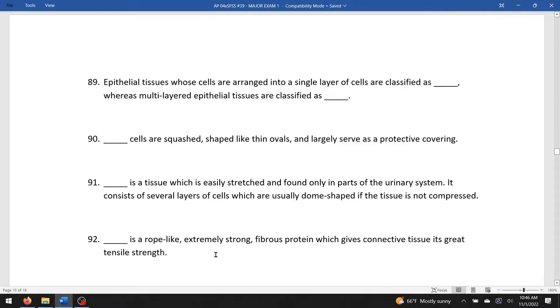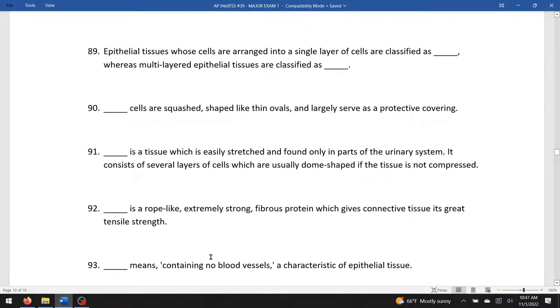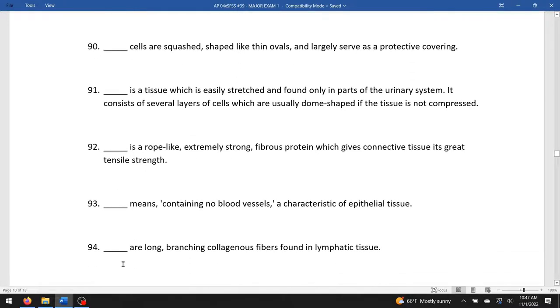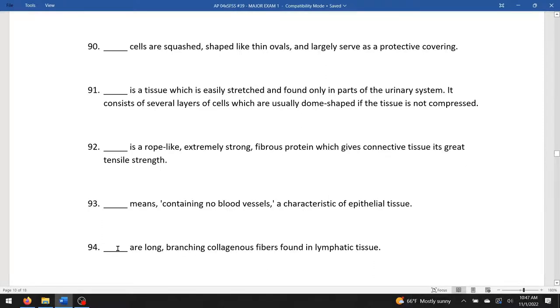Blank is a rope-like, extremely strong fibrous protein, which gives connective tissue its great tensile strength. All of that describes collagen. Blank means containing no blood vessels, a characteristic of epithelial tissue. That would be avascular. Blank are long-branching collagenous fibers found in lymphatic tissue. Branching is the key here. Branching collagen is called reticular. Blank is a specific type of tissue which consists of single layer of boxy cells, simple cuboidal.